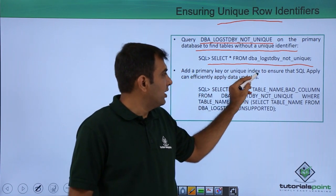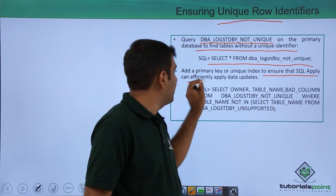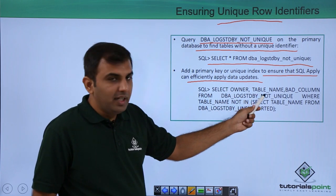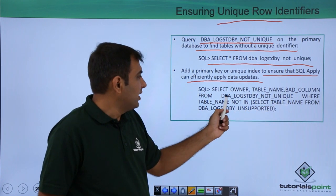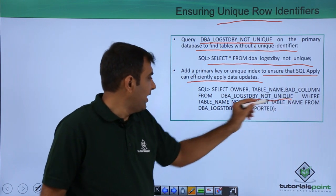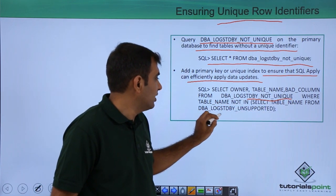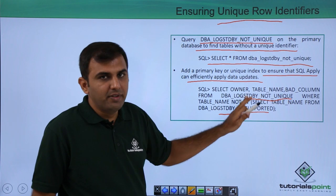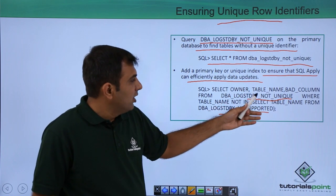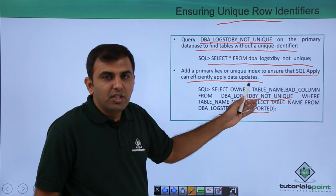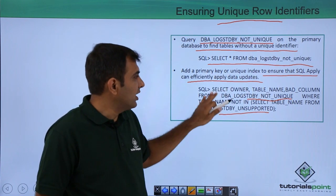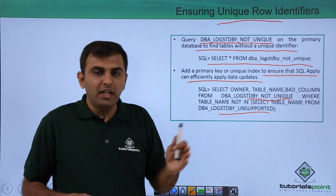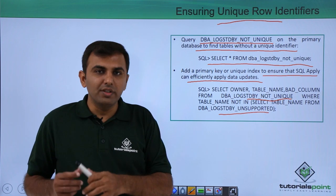Add a primary key or unique index to ensure that SQL apply can efficiently apply the data updates. Find the tables identified and create the unique constraint or primary key on them so that data updates are properly passed to the logical standby.